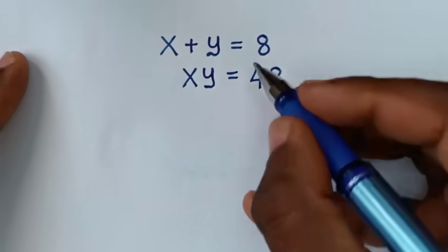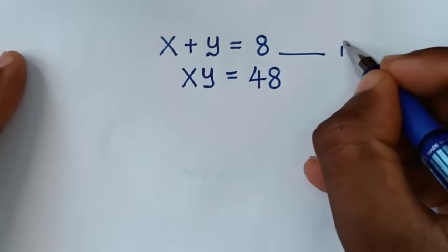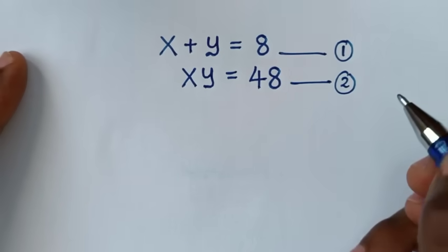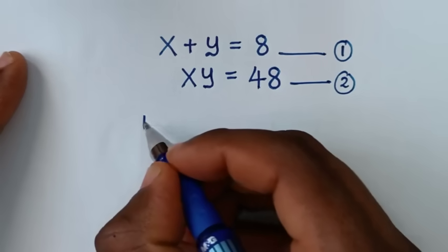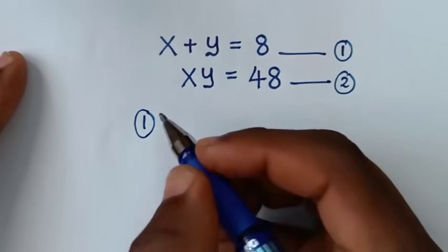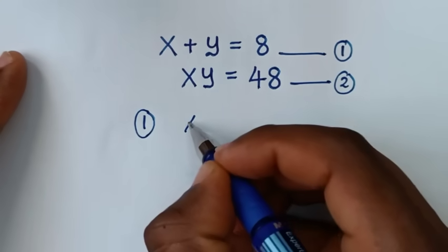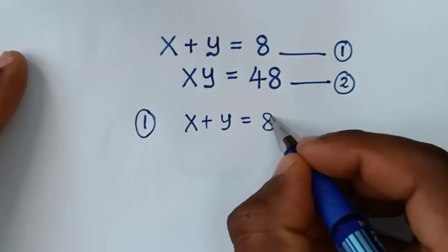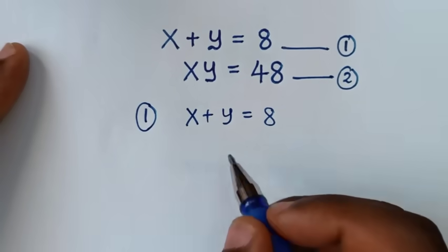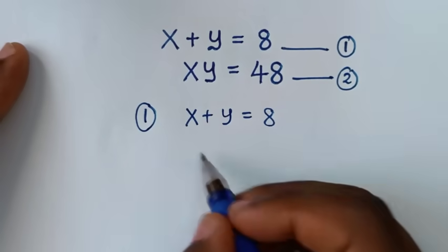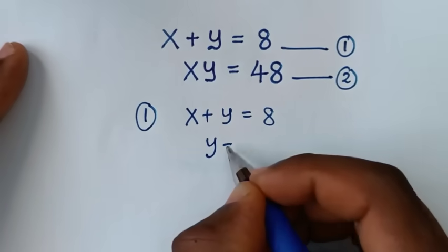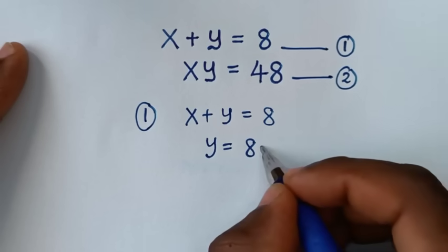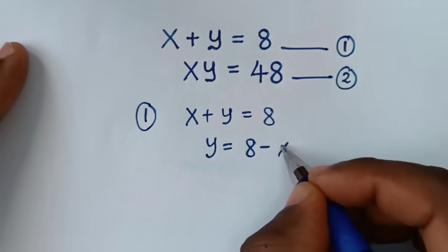So let's start by letting this as equation 1 and this as equation 2. Then in the first step, we start from equation 1, whereas equation 1 it is x plus y is equal to 8. So we'll make y the subject by taking x to the right side, so it will be y is equal to 8 minus x.